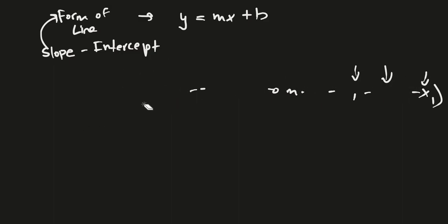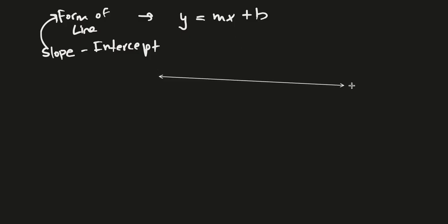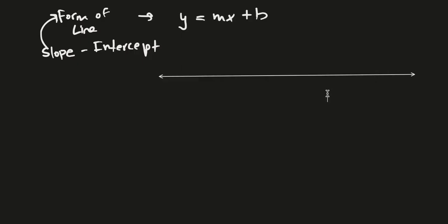The point-slope form goes like this: y minus y1 equals m times x minus x1. There are a lot of unknowns you might be seeing — what is this m? What is y1? What is x1? What is b? You'll be looking at these and understanding them. Let's first look at what a line is. You've probably seen lines before.